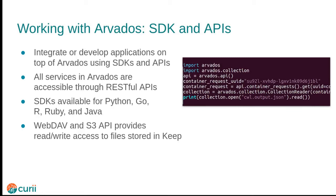Arvados offers software development kits for several different languages, currently Python, Go, R, Ruby, and Java. The SDKs make it easy to access the underlying REST APIs, as well as direct access to data stored in Keep. In addition, software can access files in Keep through WebDAV and S3-compatible APIs offered by Arvados.